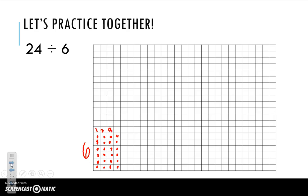So how many groups of 6 did it take me to get to 24? 1, 2, 3, 4. We know that inside all those dots it equals 24. We divided by 6 and it equals 4.